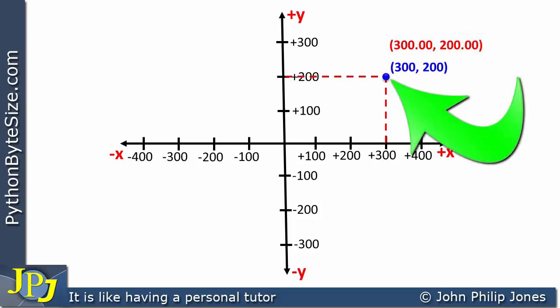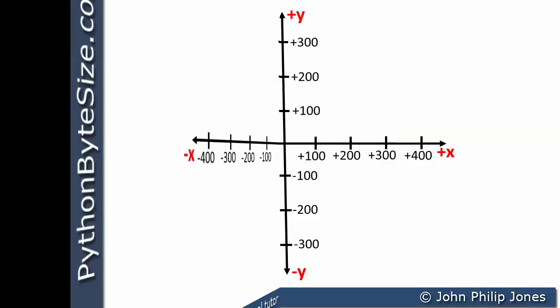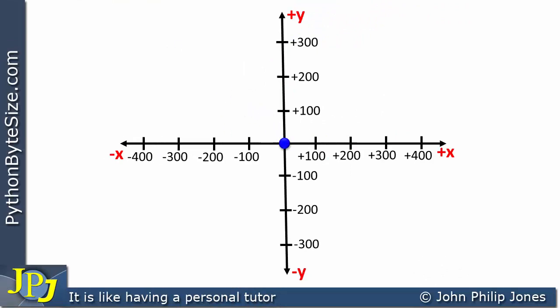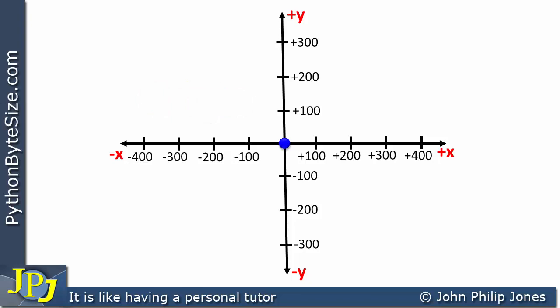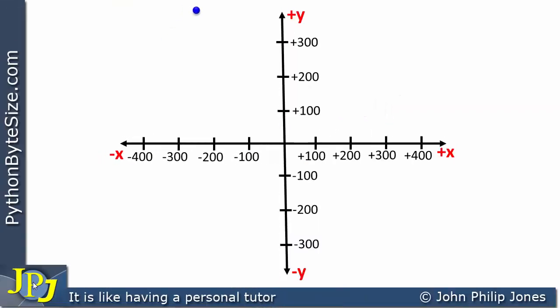Now let's consider the position of a dot that has come to rest at the origin of the graph. It hasn't moved along the x-axis or the y-axis in either direction, so it is at 0.0 on the x-axis and 0.0 on the y-axis. Consequently, the coordinate position is (0, 0), and in Python when using Turtle it will show 0.0 in both cases, with room for decimal fractions.